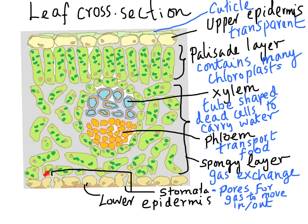So as you can see, one organ — the leaf — is made up of different tissues. Each tissue is made up of the same type of cells which have very similar structure and similar function. As you can see: the xylem tissue, phloem tissue, spongy layer cells — each forms a tissue. You also have the lower epidermis. The collection of all these tissues performs a common job, which is photosynthesis.